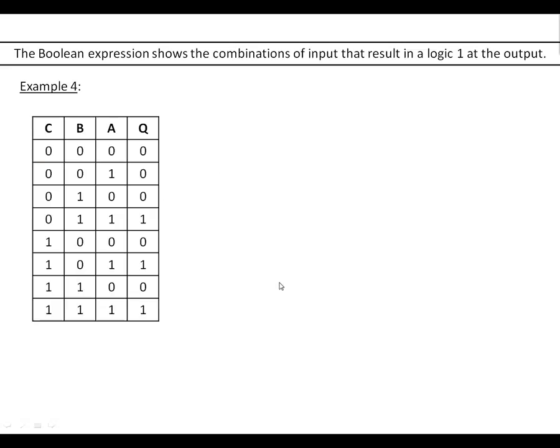So for example 4 we've got a longer truth table here. More inputs. And what we're going to do is we're going to identify when the output is high. So this time we've got C is low, B is high, A is high. C is low, B is high, A is high.